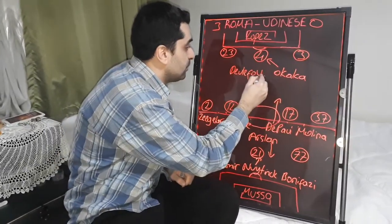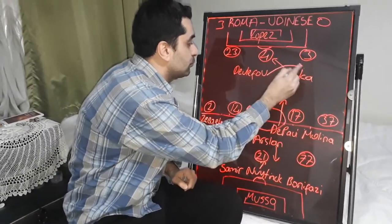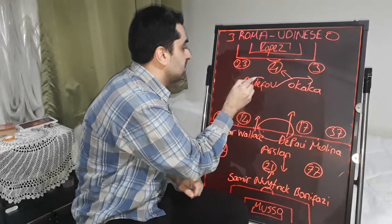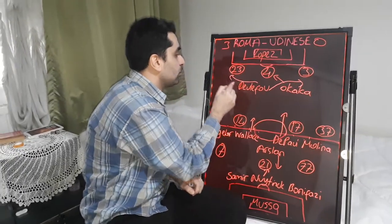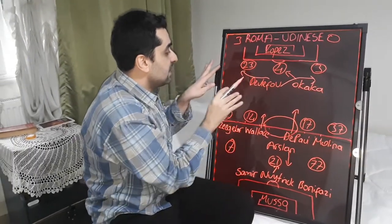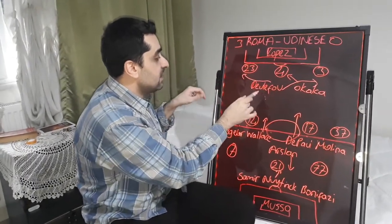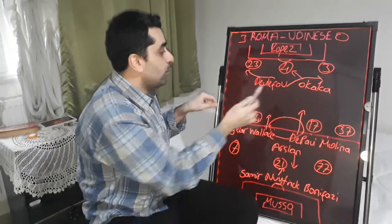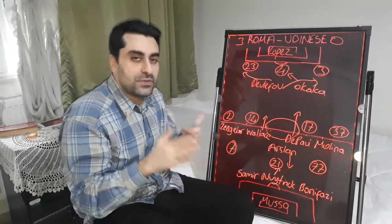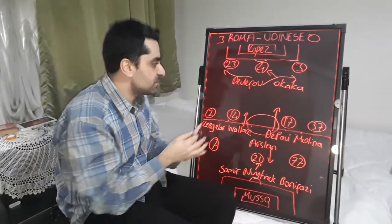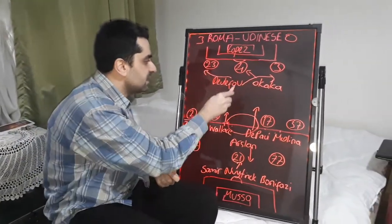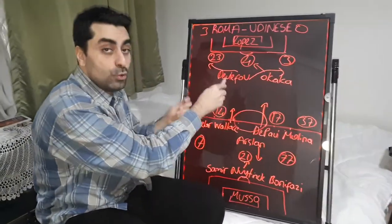Sometimes Derifou moved close to the right, sometimes to the left, pressing on Roma's defense. Derifou found a few goal positions but missed all of them.